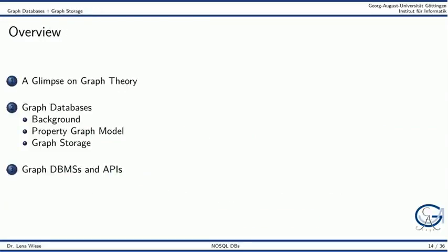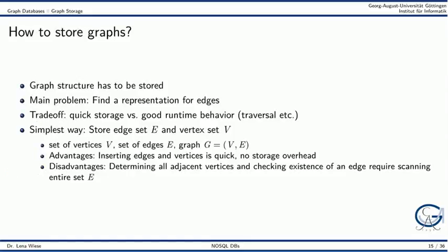The next topic we will cover is graph storage — how can one efficiently store a graph structure? The main problem is finding a good representation for edges. There is an inherent trade-off between quick storage and good runtime behavior, for example for graph traversals. As the simplest option, we can store the vertex set V and separately the edge set E. The advantage is quick insertion of edges and vertices with no storage overhead, but the disadvantage is that determining all adjacent vertices or checking the existence of an edge requires scanning the entire set E.